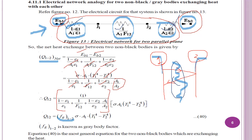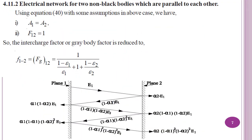We can also write this as Q₁₂ = FG₁₂ · σ · A₁ · (T₁⁴ − T₂⁴), where FG₁₂ is the grey body factor. This is the most general equation for two non-black bodies exchanging heat, where ε₁ and ε₂ are emissivities, A₁ and A₂ are areas, σ is the Stefan-Boltzmann constant, and T₁ and T₂ are temperatures. For two non-black bodies parallel to each other, A₁ = A₂ and F₁₂ = 1.